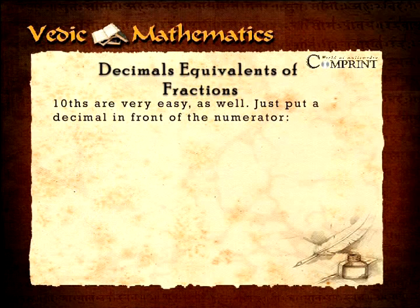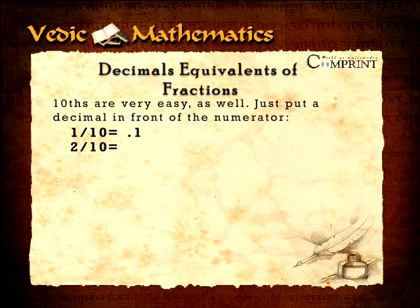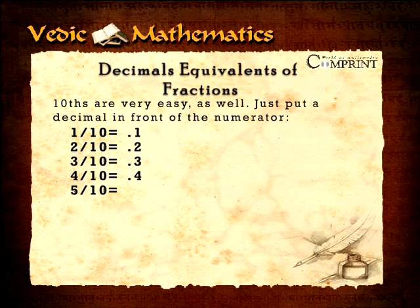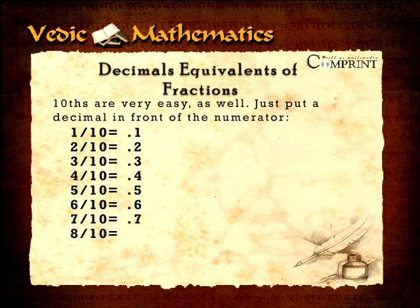The tenths are very easy as well. Just put a decimal in front of the numerator: one-tenth equals 0.1, two-tenths equals 0.2, three-tenths equals 0.3, four-tenths equals 0.4, five-tenths equals 0.5, six-tenths equals 0.6, seven-tenths equals 0.7, eight-tenths equals 0.8.